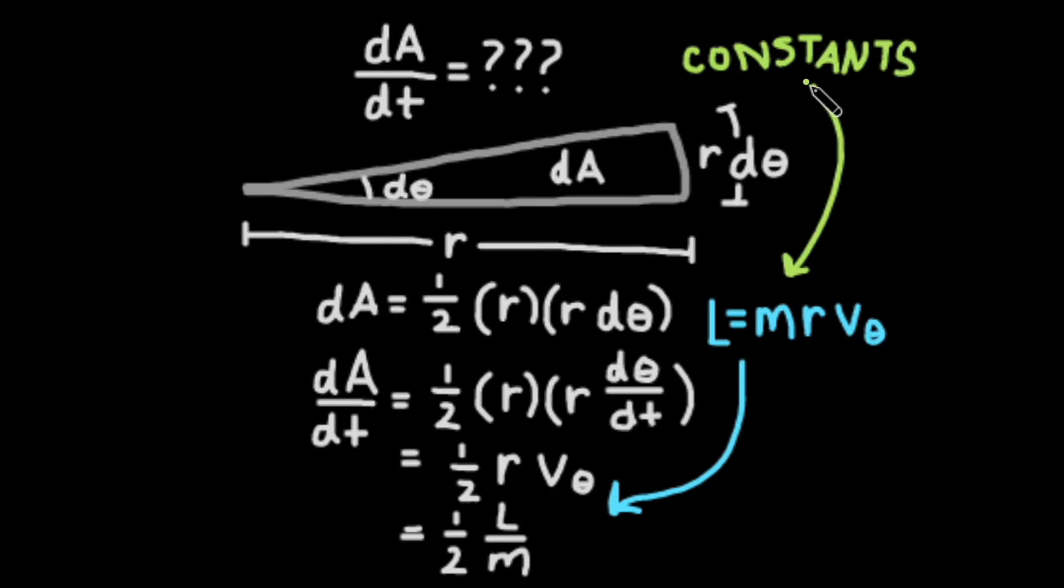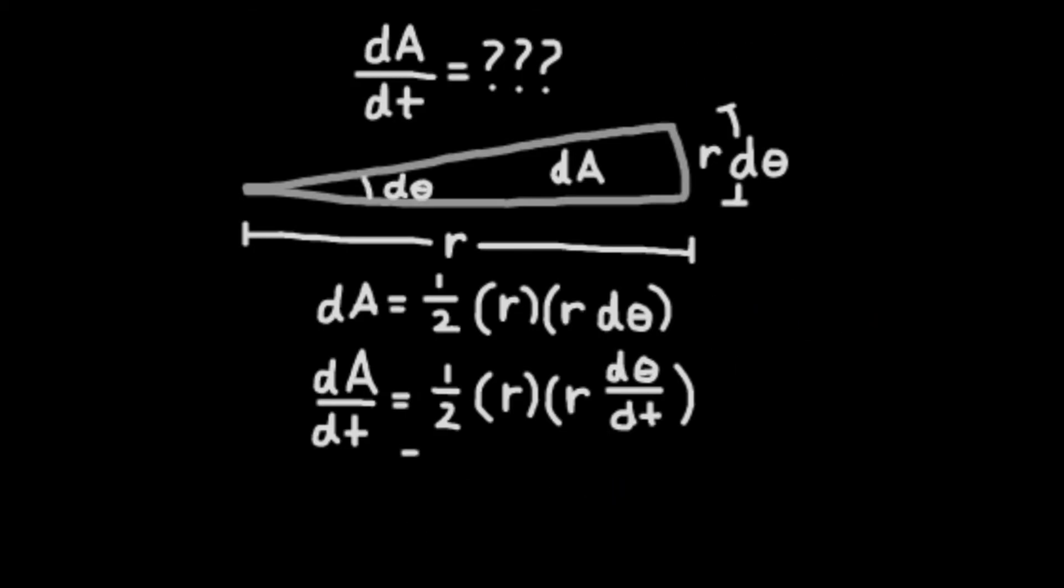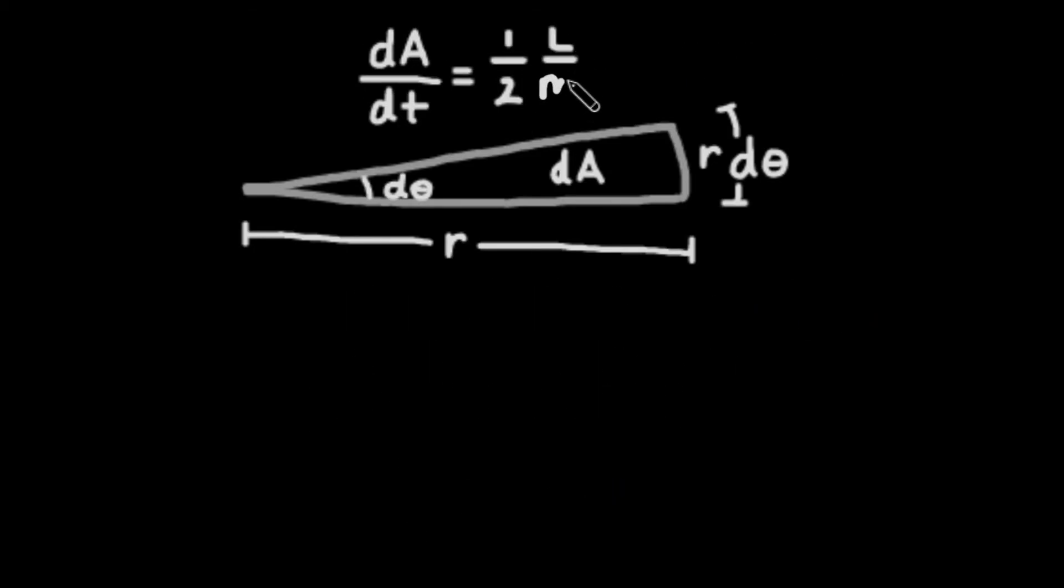Since angular momentum is constant and the mass of the object is the same throughout the orbit, we can say that dA dt is equal to a constant. Therefore, the change in area over a change in time is the same throughout the orbit.